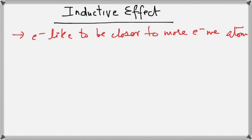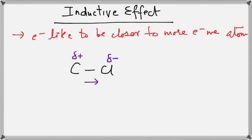If we have a bond between carbon and chlorine, chlorine is more electronegative than carbon, and therefore the electrons will shift towards the chlorine atom. This leads to the generation of a small delta negative charge on the chlorine atom and a small positive charge on the carbon atom, because electrons have a negative charge. If you gain electrons you get a negative charge, and if you lose electrons you get a positive charge. Because of this charge separation, it leads to the formation of a polar bond.